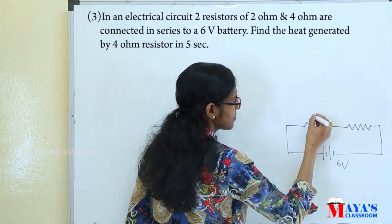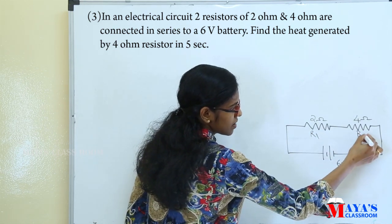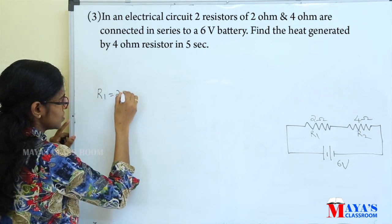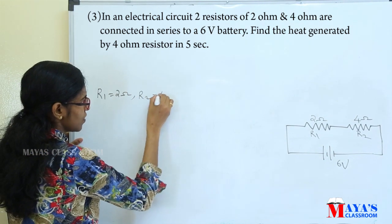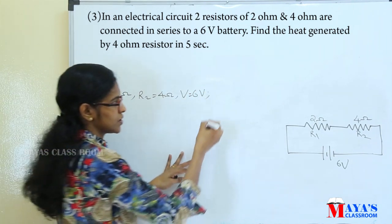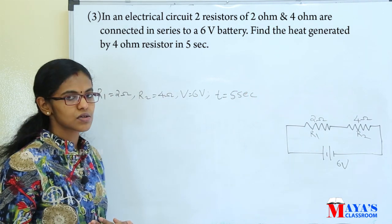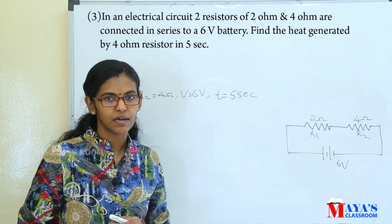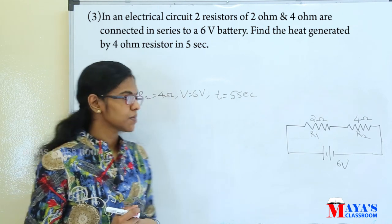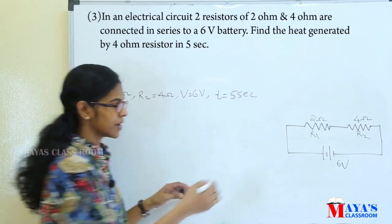The 6-volt battery is connected with the 2 ohm resistor and the 4 ohm resistor. R1 is equal to 2 ohm, R2 is equal to 4 ohm, and the voltage is 6 volt. The 4 ohm resistor will generate heat in 5 seconds. The current in a series connection is the same throughout.